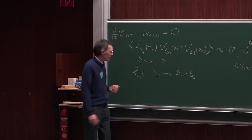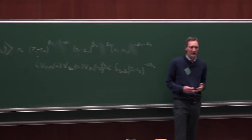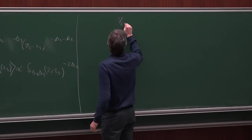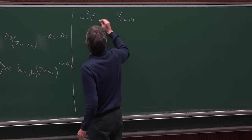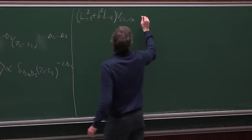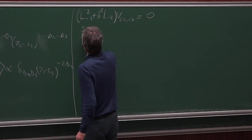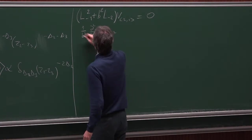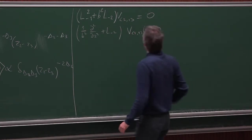Now let's consider the next case where we have a null vector at level 2. Let's consider the field V₂₁. This field is killed by the combination L₋₁² + b² L₋₂, or in other words, (1/b²)(d²/dz²) + L₋₂, acting on V₂₁(z) = 0.